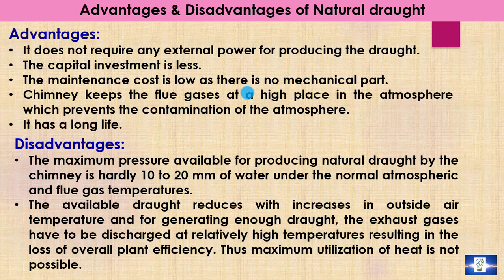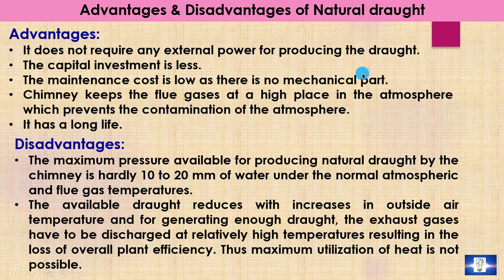There are different advantages and disadvantages of natural draft. In the natural draft system, no external power is required because there is no fan, so capital investment is also less. Maintenance cost is also low due to the absence of mechanical parts like fans or other equipment. The chimney height is required to be high, which prevents contamination of the atmosphere by the polluted gases.